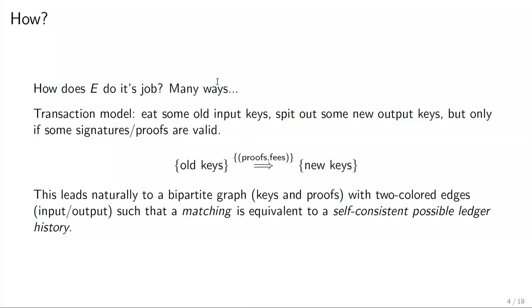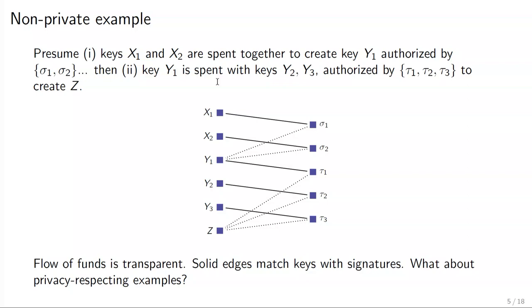The transaction model for most cryptocurrencies is: you eat some keys and spit out some keys, and the only way to tell it's valid is with proofs and fees — signatures are proofs of knowledge, ZK-SNARKs are proofs of belongingness to a shielded pool. Almost every output-based currency can be visualized this way. This is where everything falls apart from the very beginning: keys in, keys out, authorized by signatures — because what we can do is build a big graph.